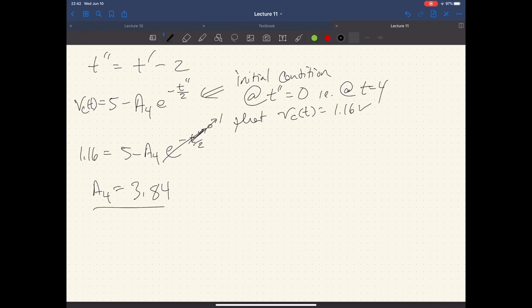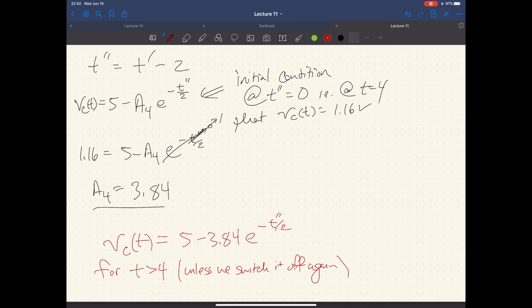And so our equation for V_C, and I'll do it in red because we like to do our final ones in red. So V_C(t) for T greater than four. And again, unless we switch it off again, we end up with five minus 3.84 e to the minus T over two. That's it. If we want to see where it is at T equals six, I'm sorry, this should be double prime here. Plug in two into here, you end up with a, I'm sorry, not five point. That'd be weird. 3.59 volts.